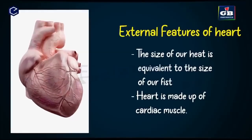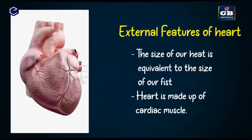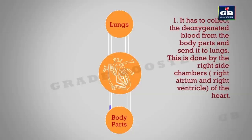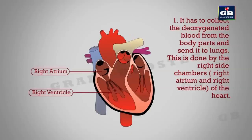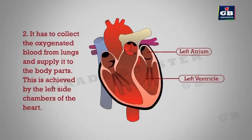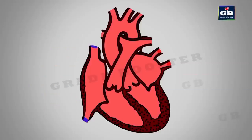Our heart is a muscular organ about the size of our fist. The heart does two important jobs. The first job is to collect deoxygenated blood from different parts of the body and send it to the lungs for oxygenation — this is done by the right-side chambers. The second job is to collect oxygenated blood from the lungs and supply it to different parts of the body — done by the left-side chambers. Both tasks are performed at the same time.